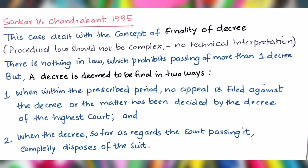Finally, there was the case of Shankar v. Chandrakanth, 1995, which dealt with the concept of finality of a decree. As procedural law should not be complex and should have no technical interpretation, it was said in this case that there is nothing in law which prohibits passing more than one decree. However, a decree is deemed to be final in two ways: number one, when within the prescribed period no appeal is filed against the decree, or the matter has been decided by the decree of the highest court; and number two, when the decree, so far as regards the court passing it, completely disposes of the suit.